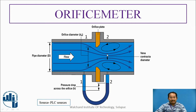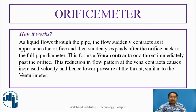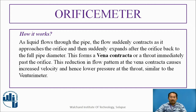This is a simple figure and the manometer is attached, showing the difference in the manometric liquid, similar to what we have done for the Venturimeter. A liquid flows through the pipe; the flow suddenly contracts as it approaches the orifice plate and then suddenly expands back to the full pipe diameter. This forms a vena contracta, or throat, immediately past the orifice. This reduction in flow at the vena contracta causes increased velocity and hence lower pressure at the throat, since velocity and pressure are inversely proportional — the same as seen in the Venturimeter.